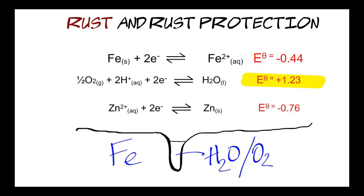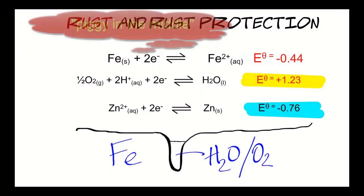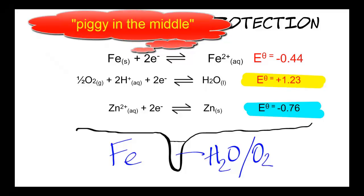Now, in this circumstance where we have three or more different half-equations present in the same system, what we find happens is that the two extremes are coupled. In this case, the one in the middle with the largest reduction potential couples with the one at the bottom, which has the lowest reduction potential. In other words, electrons move from a region of lowest electron potential to a region of highest electron potential. So the iron, so to speak, plays piggy in the middle, and nothing happens to it.